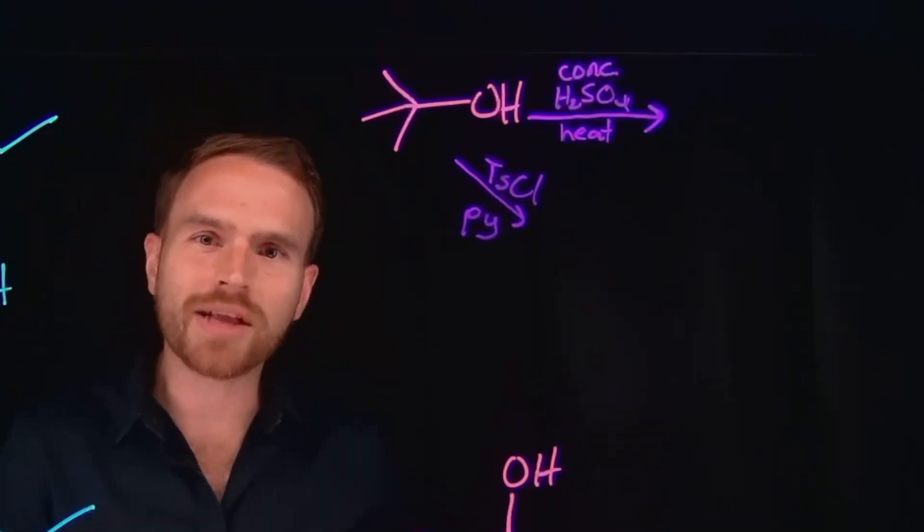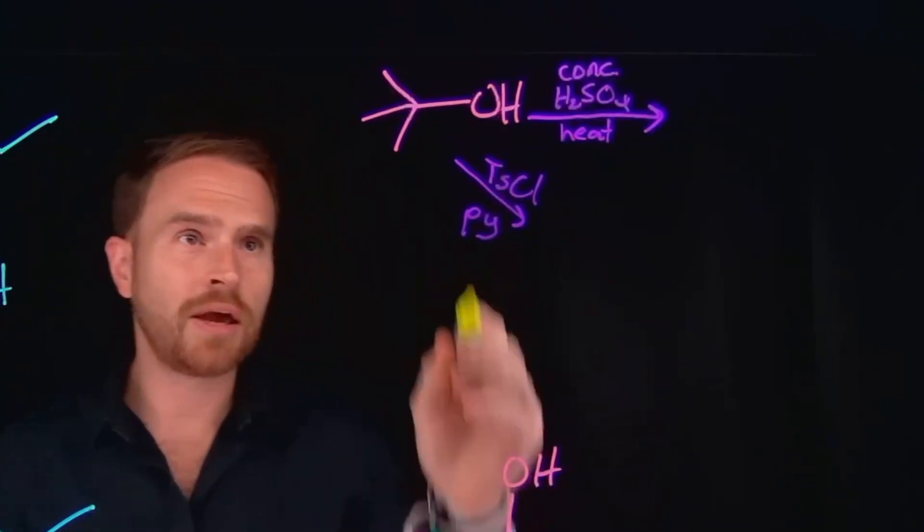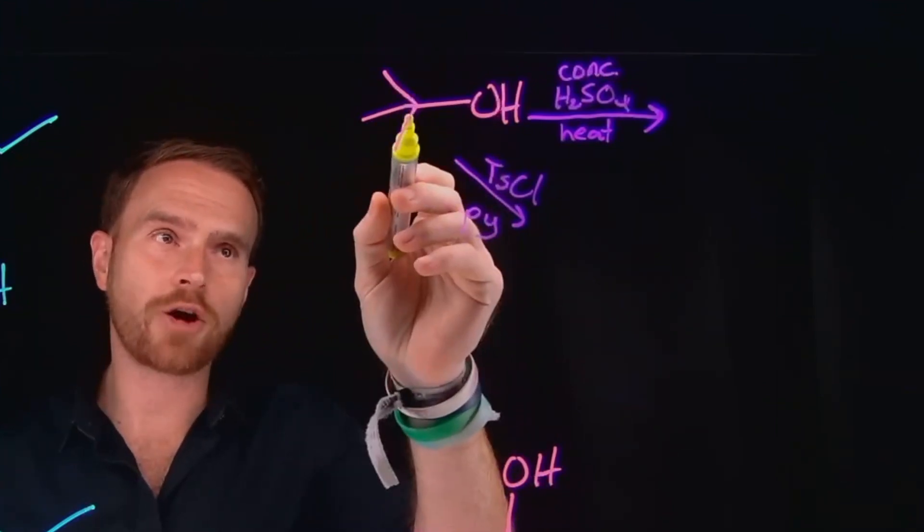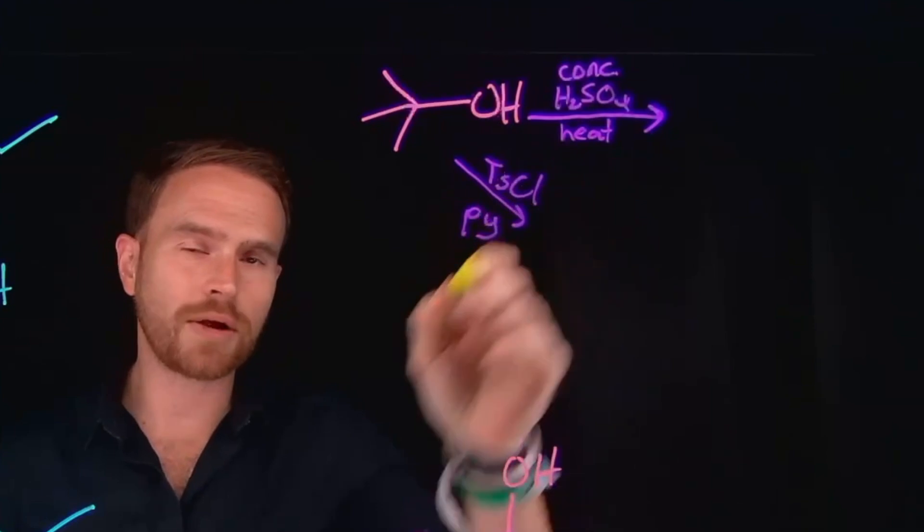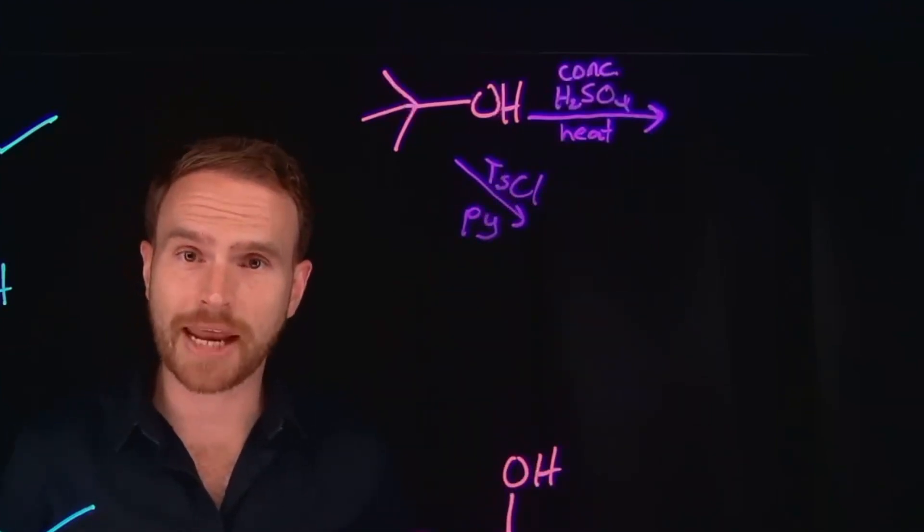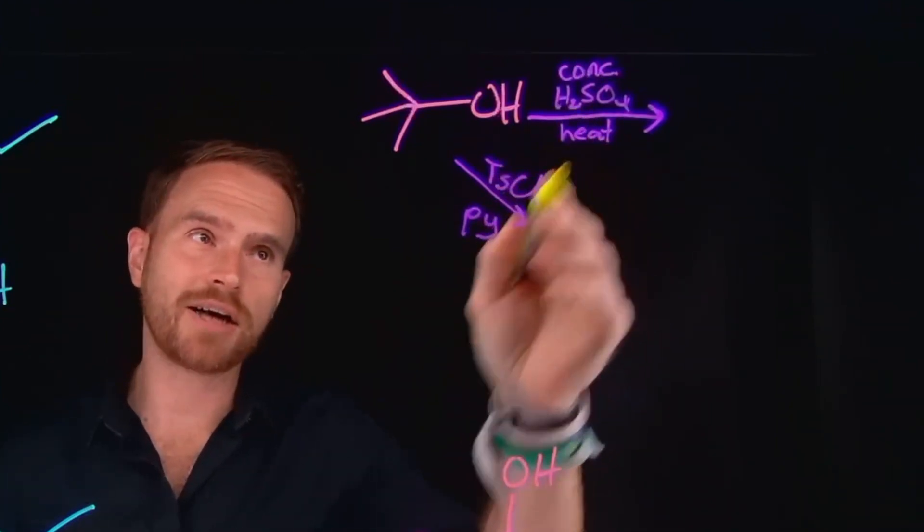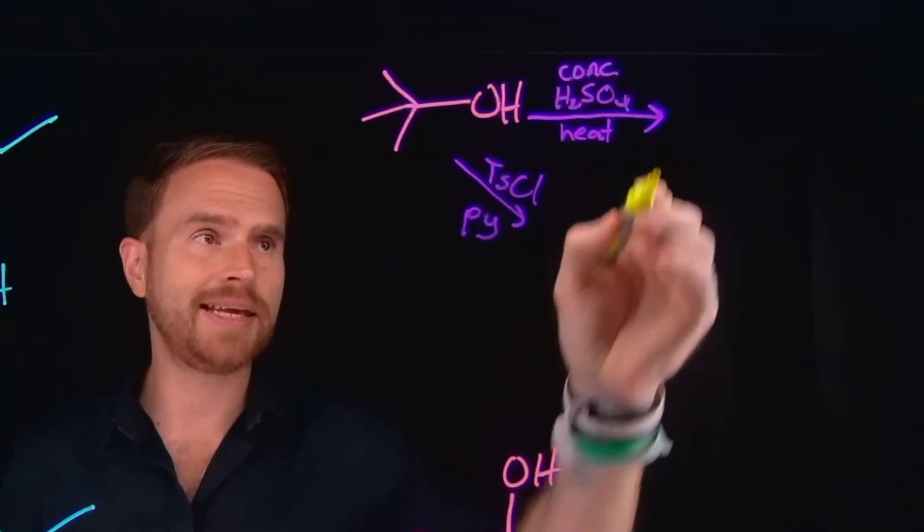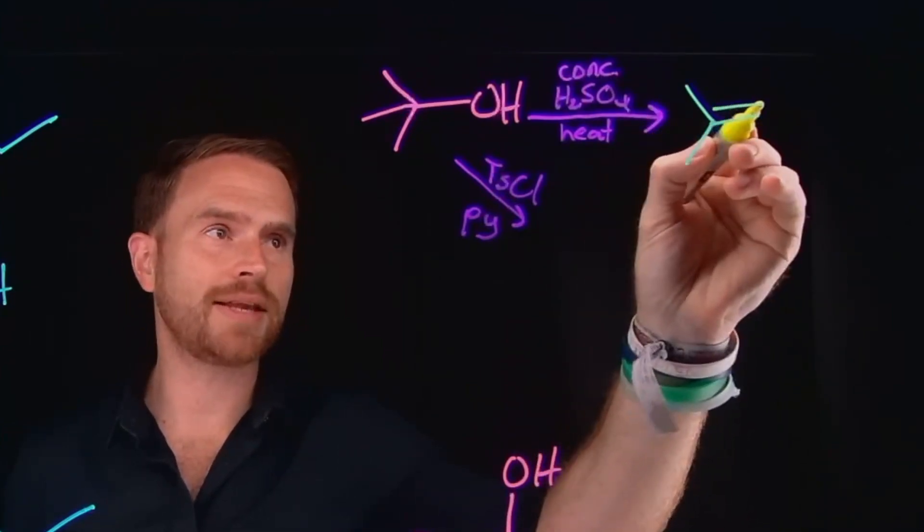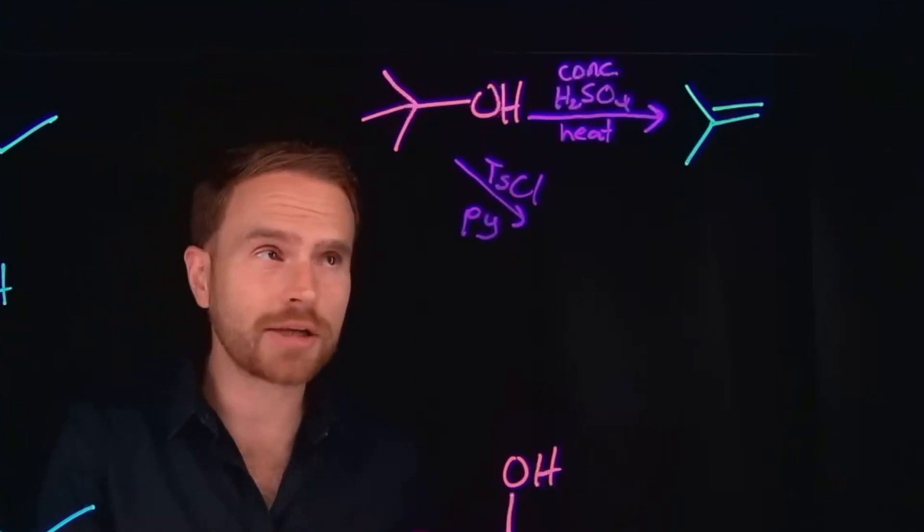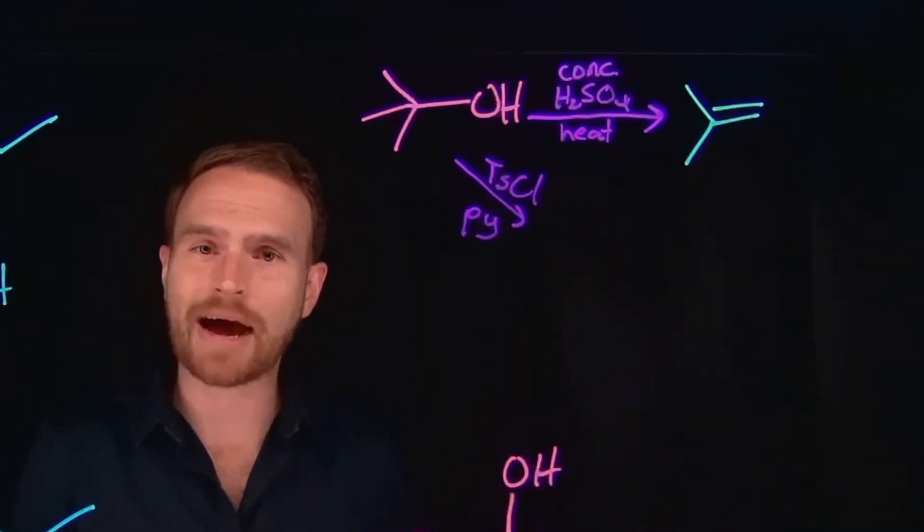Next, let's talk about how we do elimination reactions of alcohols. When you have a quaternary carbon that has an alcohol attached to it, we can consider two different pathways for this type of elimination. The first is just by adding concentrated sulfuric acid and heat, and that is going to allow us to eliminate and give us a brand new alkene. The product of elimination reactions are always alkenes.